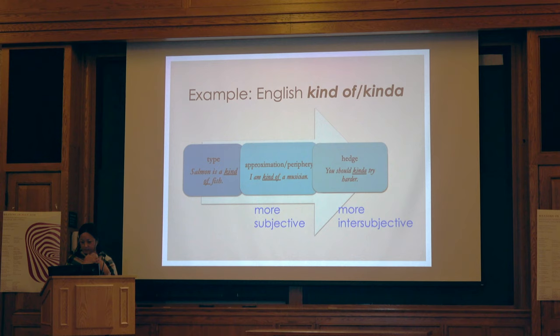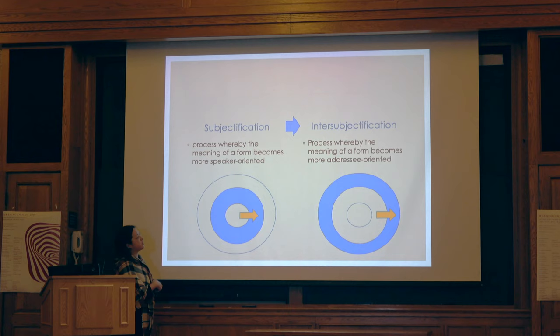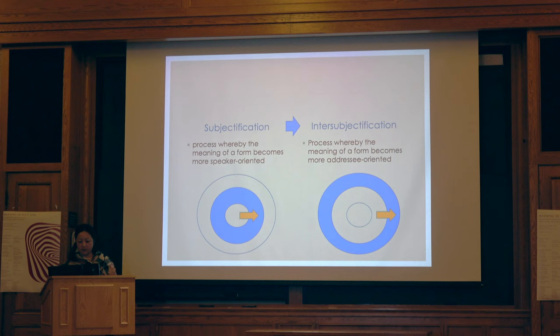This is an interesting historical context — the subjectification process, whereby the meaning of the form becomes more speaker-oriented, and intersubjectification, the second step, whereby the meaning of the form becomes more addressee-oriented. These are talked about by a number of scholars like Traugott, Dasher, and many others.